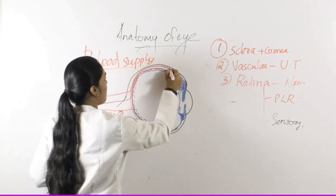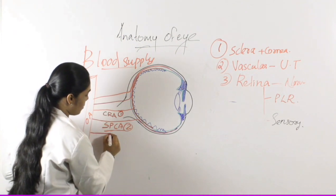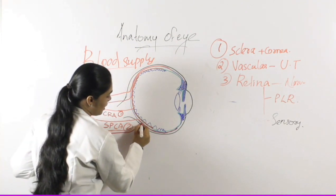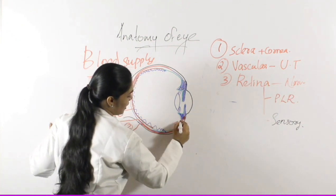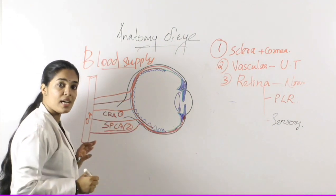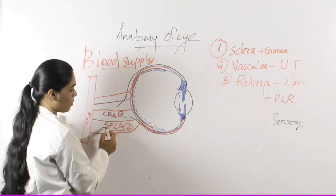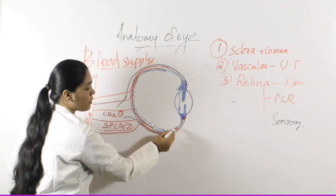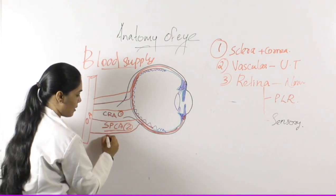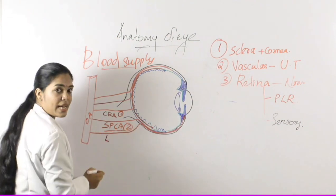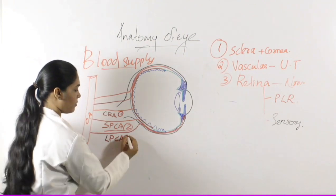The third branch also enters the eye from the posterior aspect, passes through the choroid, moves anteriorly, and extends up to the ciliary body, supplying the ciliary body and iris. Comparatively it is longer than the short posterior ciliary artery since it extends further. Because it is longer and enters from the posterior aspect, it is known as the long posterior ciliary artery.